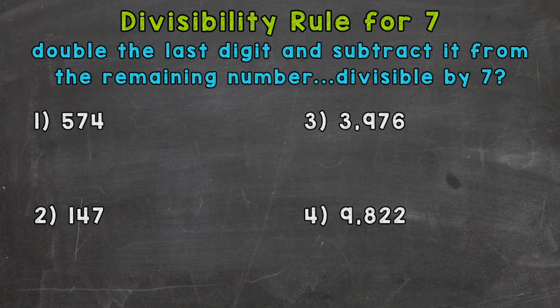So let's take a look and see what that means and jump into number 1 where we have 574. So let's double the last digit, which is 4. So 4 times 2, doubling it, gives us 8. We need to subtract 8 from the remaining number. So the remaining number is this 57 here. So let's do 57 minus 8. That gives us 49.